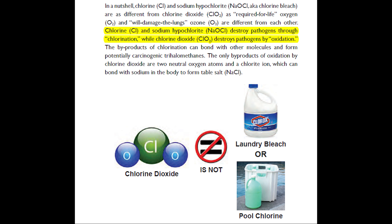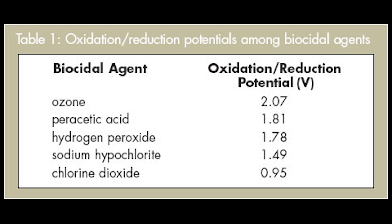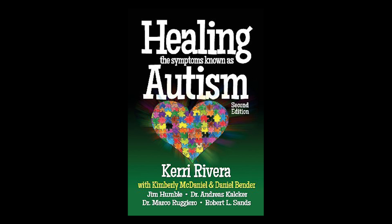On page 89, Kerry Rivera makes a poor attempt at distinguishing chlorine dioxide from household bleach and pool chlorine. Sure, chlorine dioxide is not the same chemical that is in household bleach, but bleach is not a particular chemical — it is a type of chemical that performs a certain activity. Chlorine dioxide is absolutely a bleaching agent, and it's classified as such. Chlorine and sodium hypochlorite destroy pathogens through chlorination, while chlorine dioxide destroys pathogens by oxidation. Looking again at their redox potential, I can guarantee you that sodium hypochlorite does plenty of oxidizing — it's a stronger oxidizer than chlorine dioxide is. It is little consolation that this book promotes the ingestion of a chemical that is not quite as bad as household bleach.